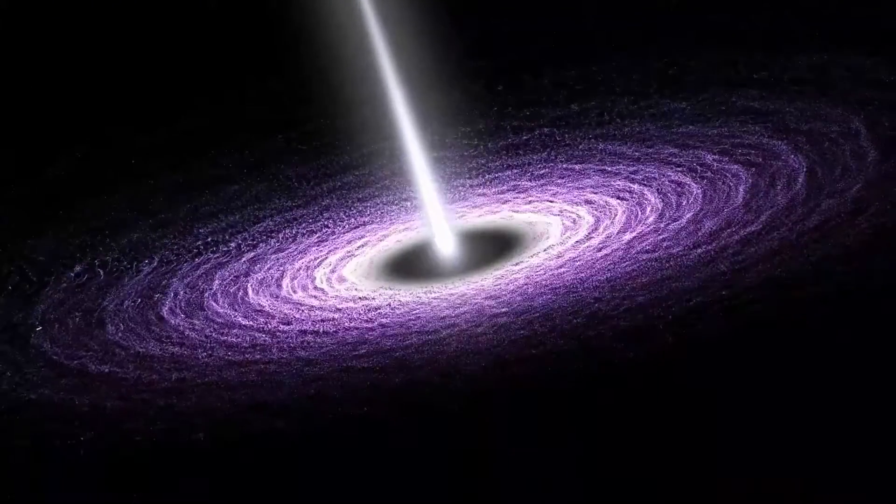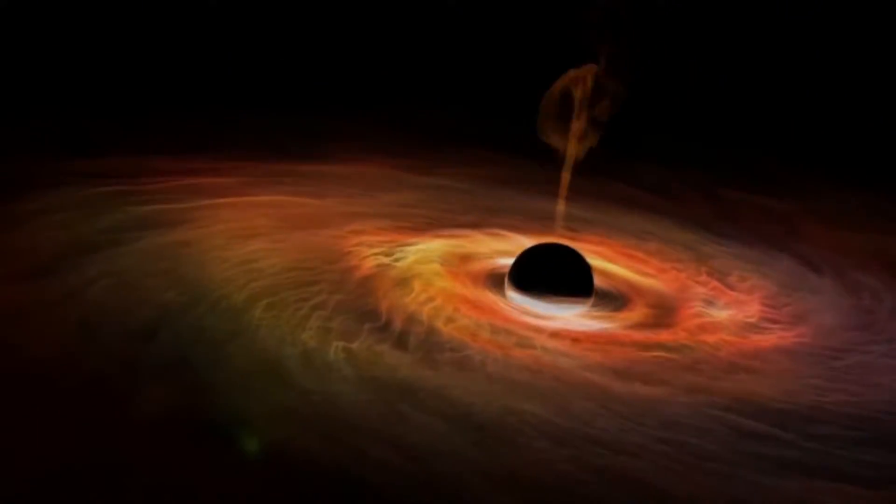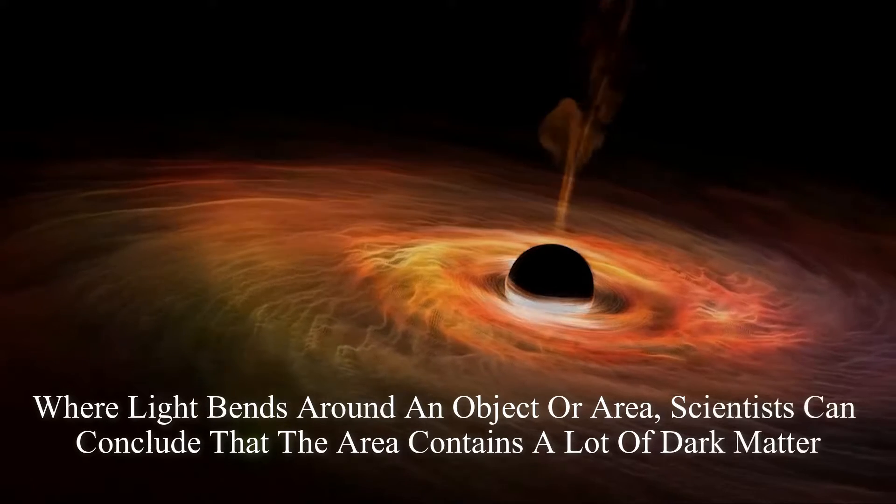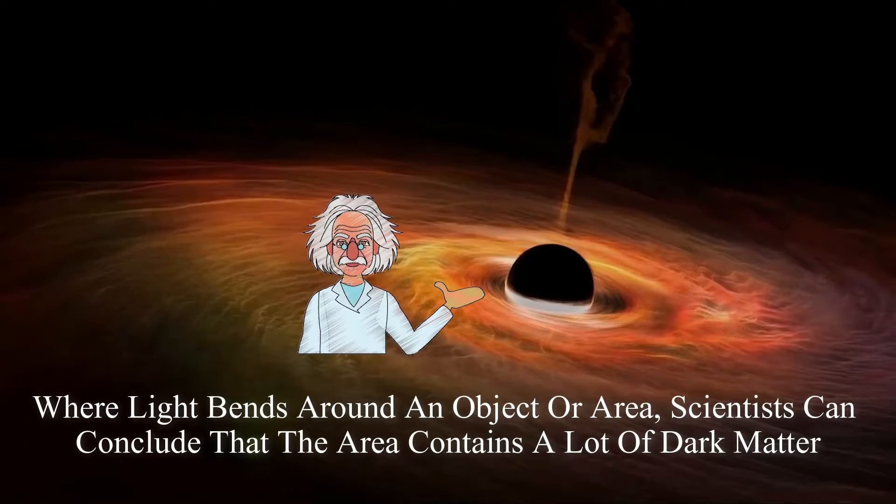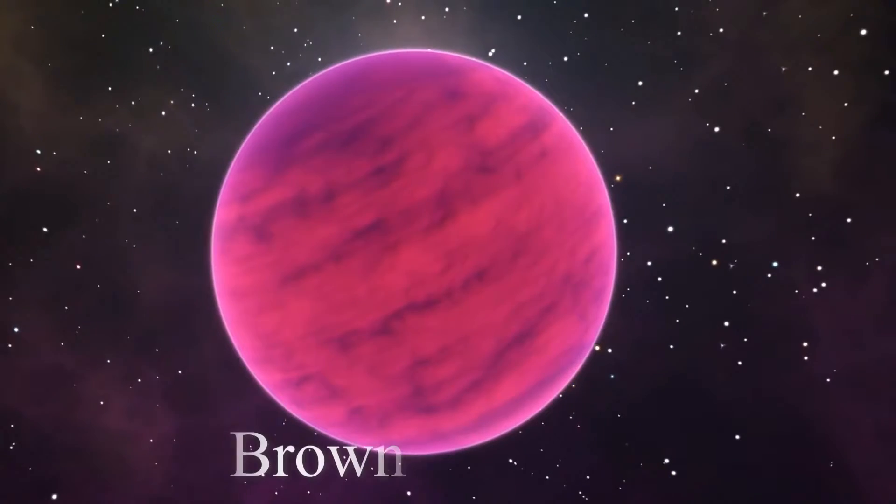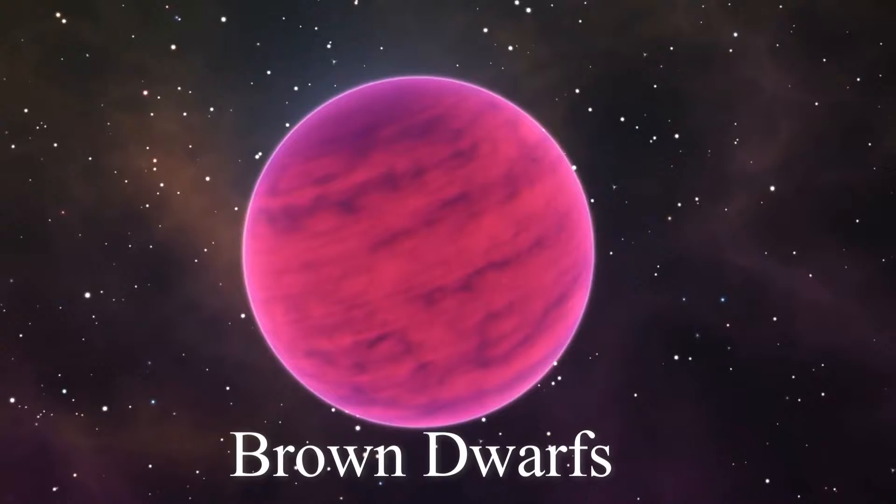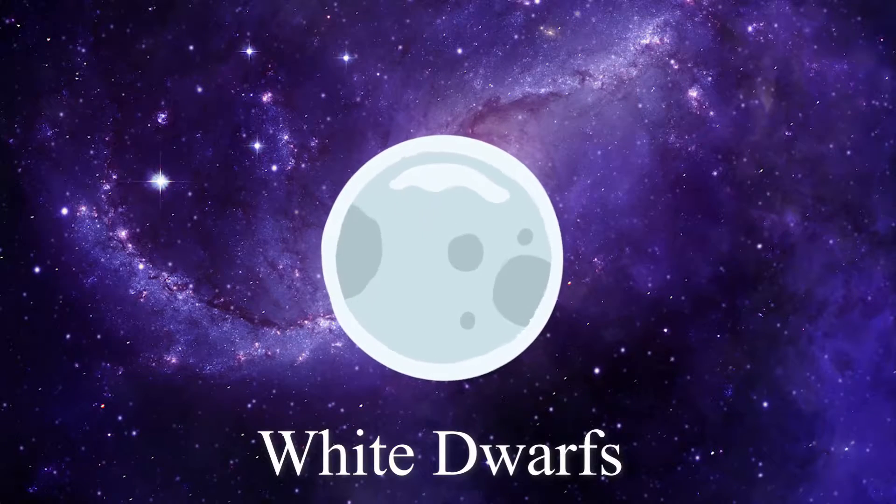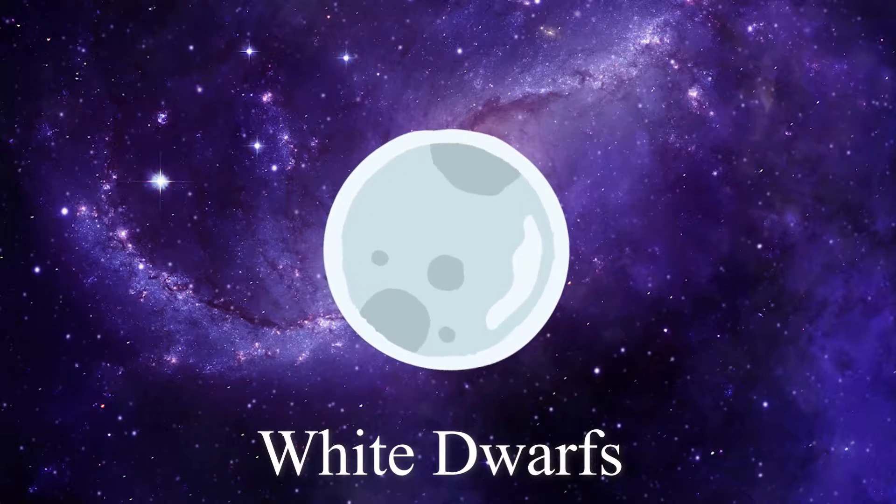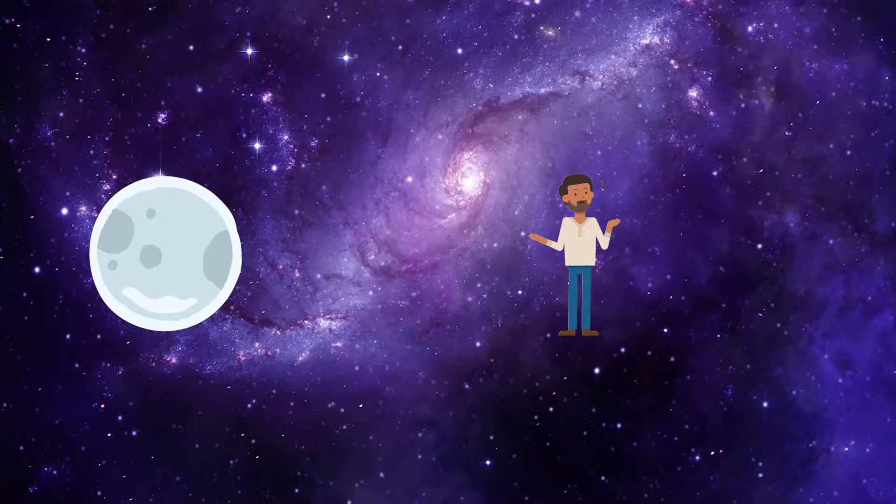Dark matter is also visible through its interaction with other objects. For example, where light bends around an object or area, scientists can conclude that the area contains a lot of dark matter. Brown dwarfs, which have failed stars that are bigger than planets but don't have enough mass to become stars, and white dwarfs, the degenerate core material which exists after the death of a star, may also make up some of this unexplained mass.